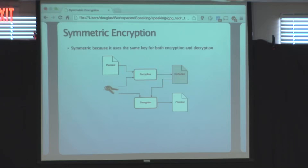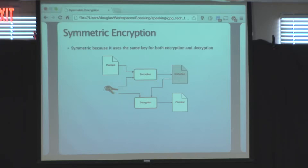Another form of encryption used in GPG is symmetric encryption. The idea is there are two functions — encrypt and decrypt — and they both work with the same key. That's what makes it symmetric. You give it plaintext and the key, it gives you encrypted ciphertext. The key and the ciphertext fed into decryption gives you back the original message. This is useful when you need to encrypt something for many people: give everyone the same key and they can all decrypt it.